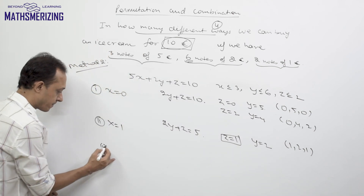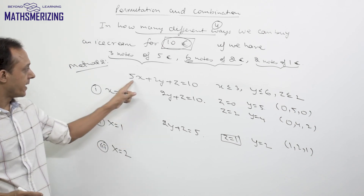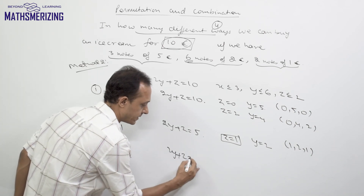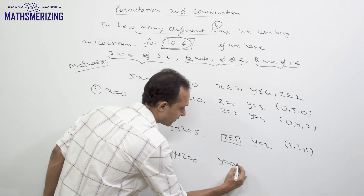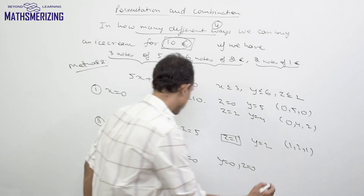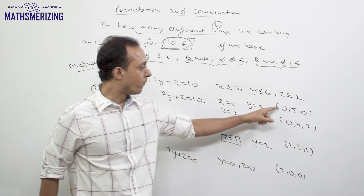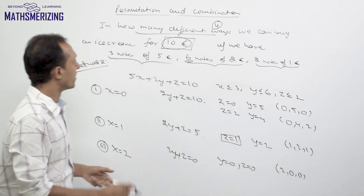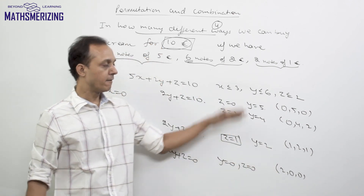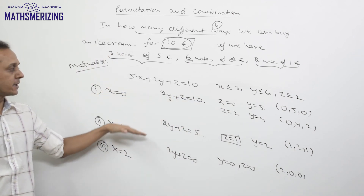Case 3: x = 2. Substituting gives 2y + z = 0, which leaves only one possibility: y = 0 and z = 0. So the solution is (2, 0, 0). There is no valid case for x = 3 since 5×3 = 15 > 10. In total there are only 4 cases, so the number of different ways to buy the ice cream for 10 euros is 4.